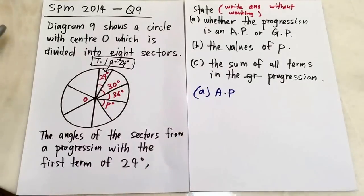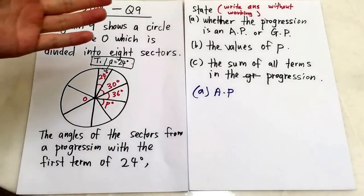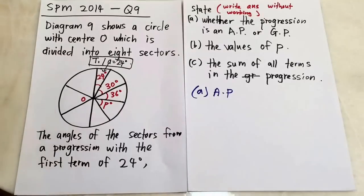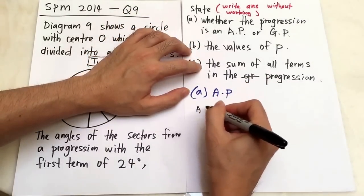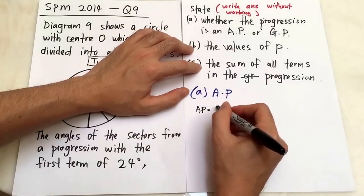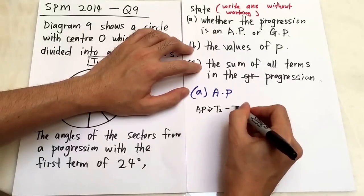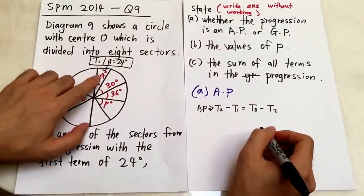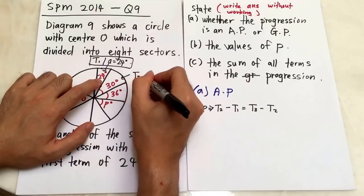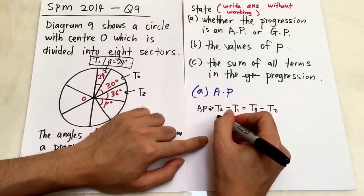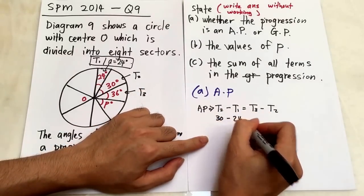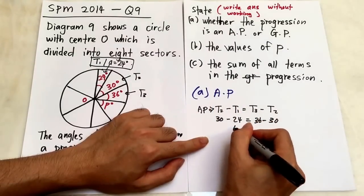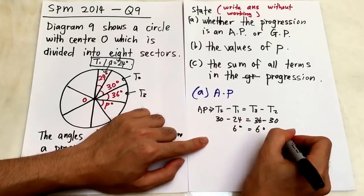Because sometimes a question will ask you to show whether it's arithmetic or geometric progression. For AP, in order to show that, second term minus first term should equal third term minus second term. First term is 24, second term is 30, third term is 36. So 30 minus 24 equals 36 minus 30 — both give you 6 degrees. That shows this is arithmetic progression.